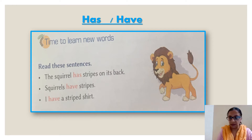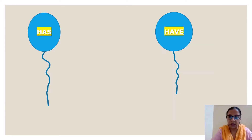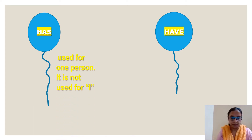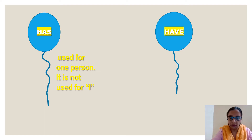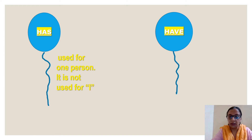So we will learn where we have to write has and where we should write have. Has is used for one person. When we talk about a single person, we will write has. But it is not used for I — has is used for one person but we will not use it for I.